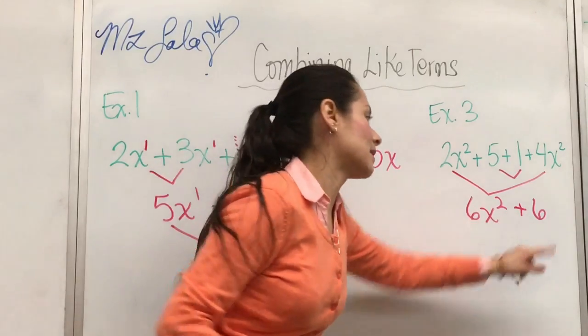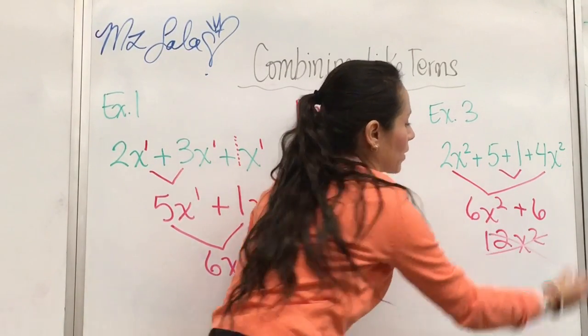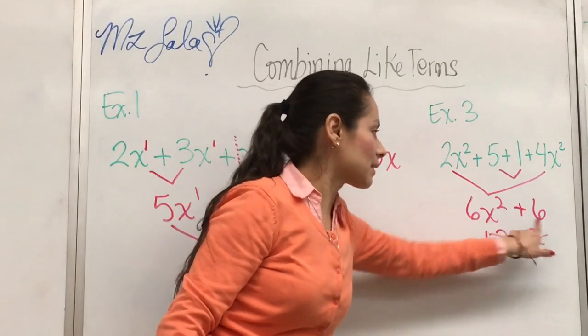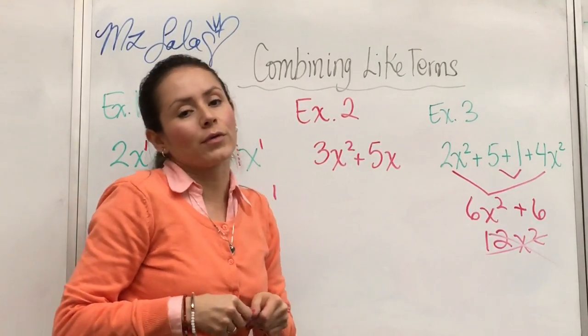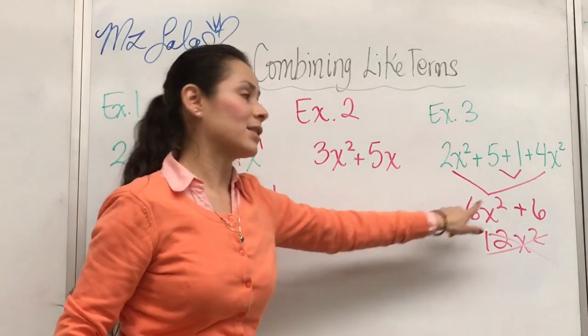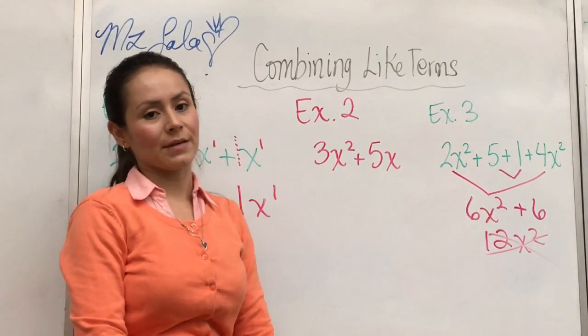You cannot combine this and this and make it 12x squared. You cannot do that because this doesn't have the same variable. And obviously, since there's no variable, you can't even check the exponent. So these are not like terms and you would just leave it like that.